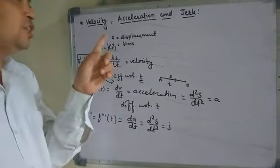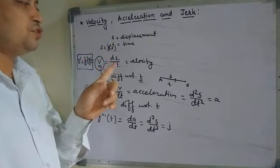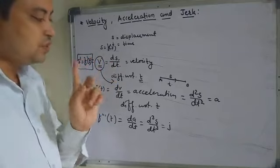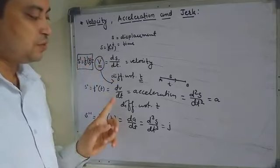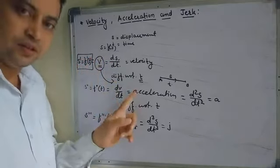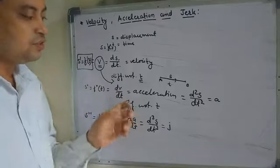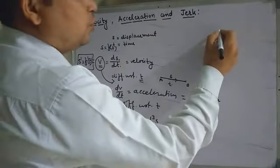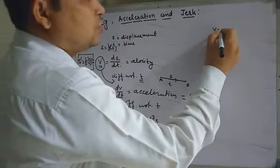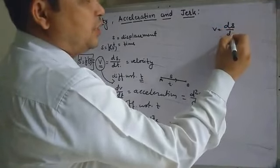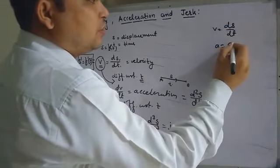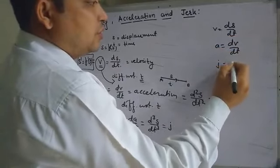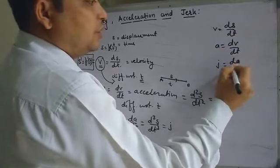So, when displacement is differentiated with respect to time, we get velocity. When velocity is differentiated with respect to time, we get acceleration. And when acceleration is differentiated with respect to time, we get jerk. So: V = dS/dt, A = dV/dt, and J = dA/dt.